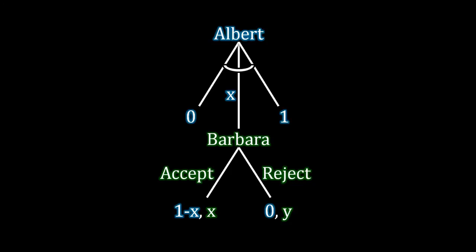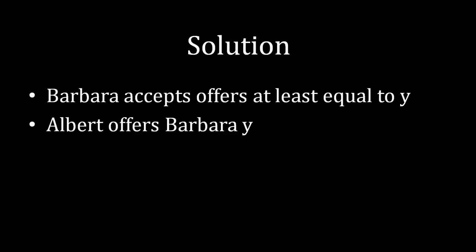If we solve this game just as we did for the standard ultimatum game where Y was equal to zero, the solution is straightforward. Barbara accepts any offer at least equal to Y. And so Albert is going to offer Barbara Y, and Barbara will accept. If Barbara rejects, she receives a payoff of Y, which means she's not going to accept anything less than that. Albert, anticipating this, knows that if he wants bargaining to succeed — which allows him to get a positive payoff rather than zero — he needs to make Barbara the minimally acceptable offer, which is equal to Y.